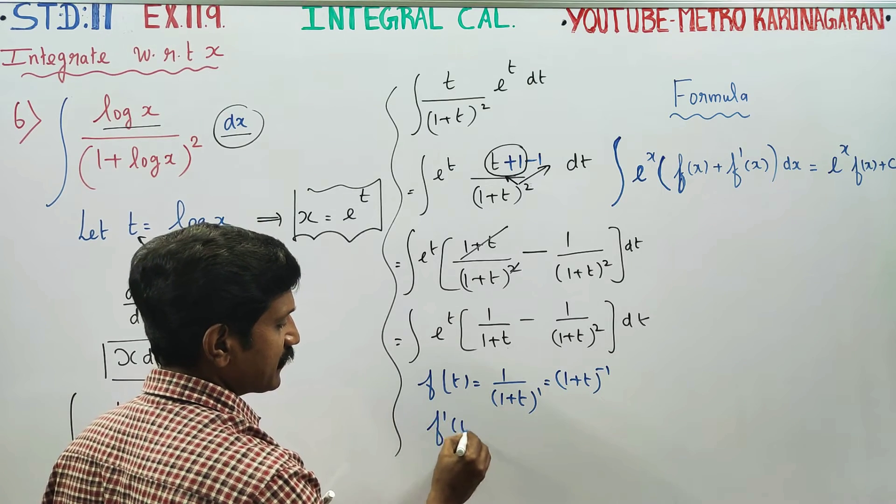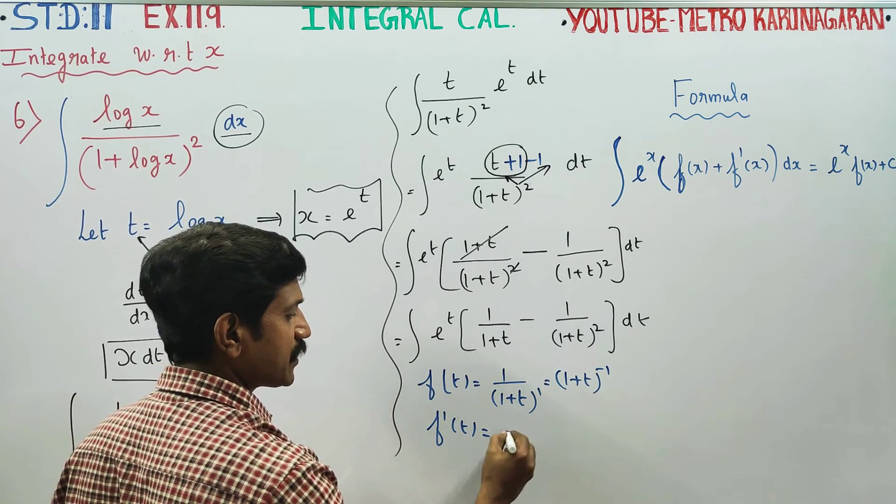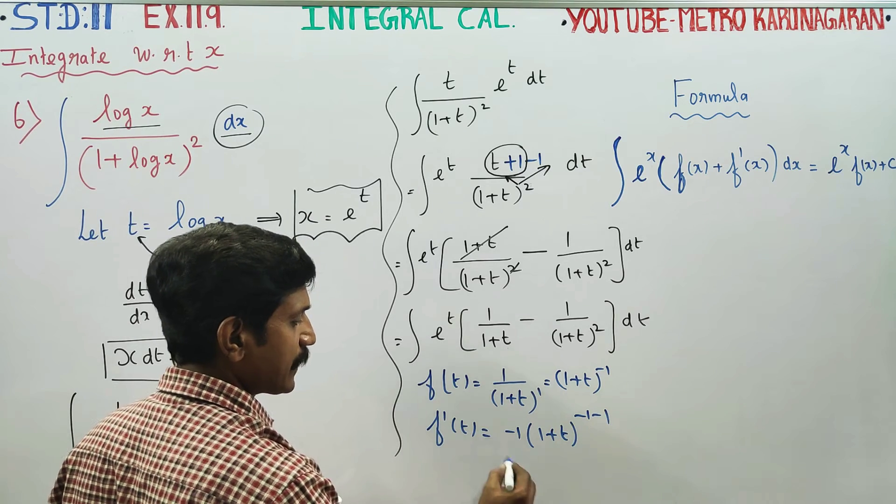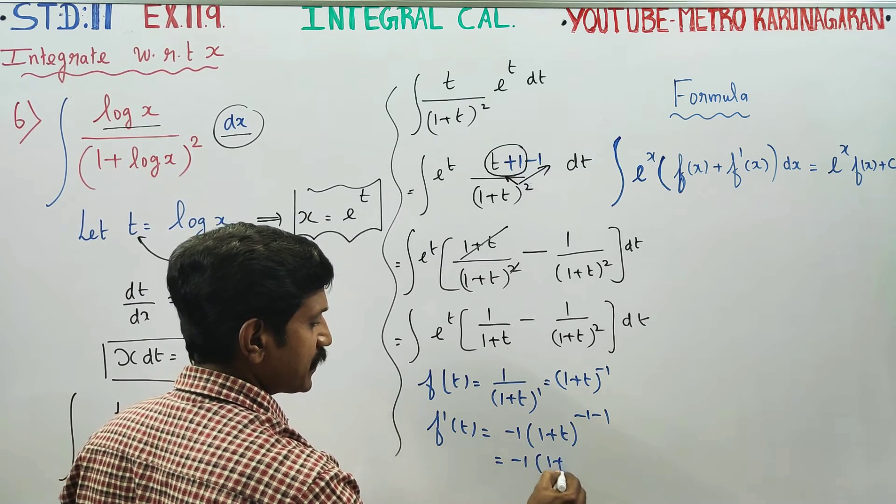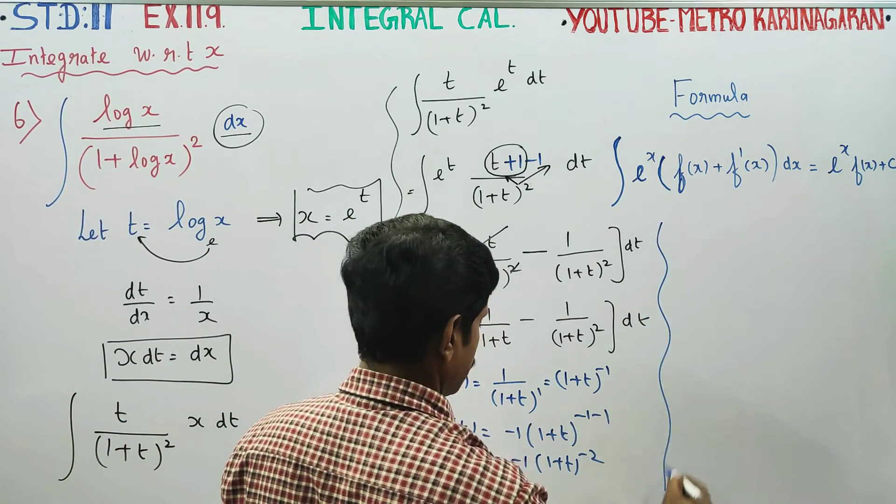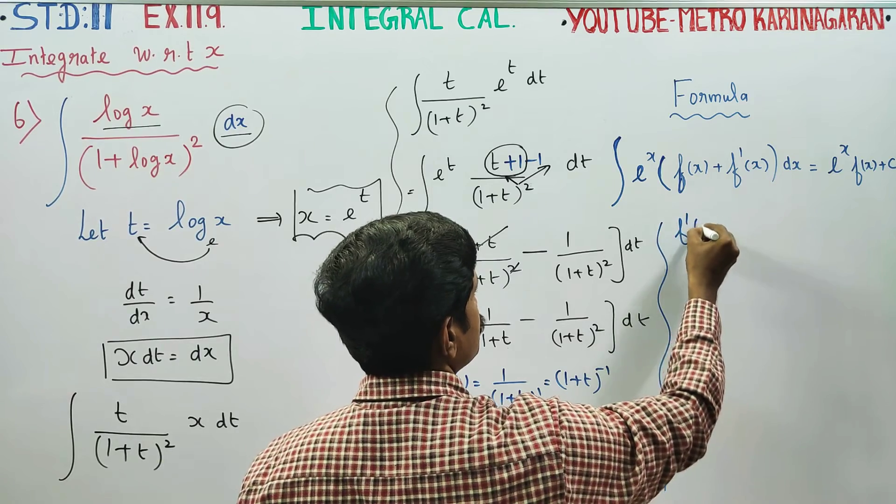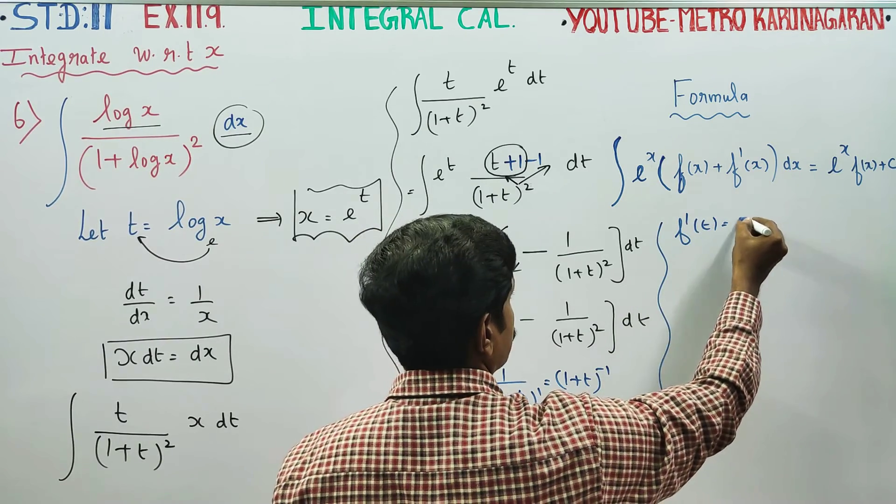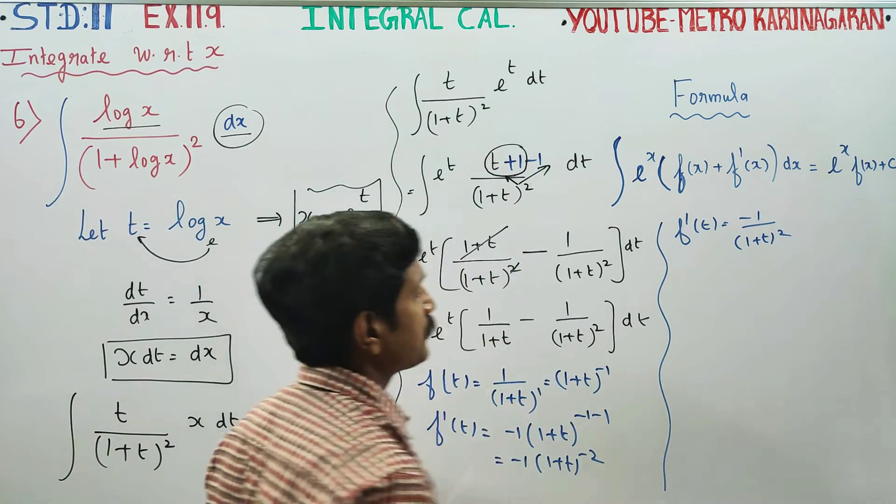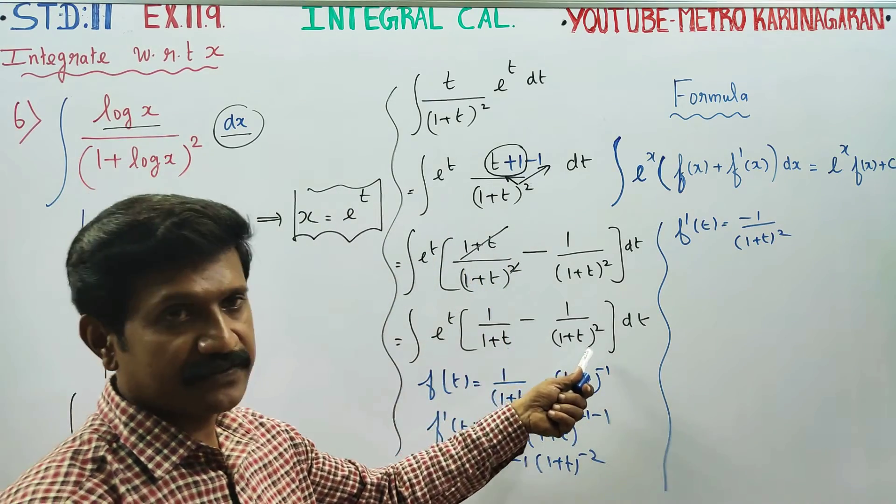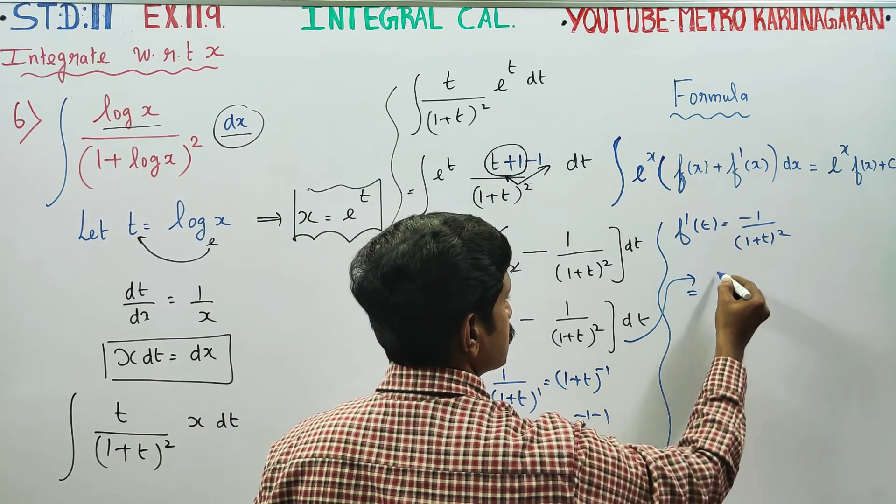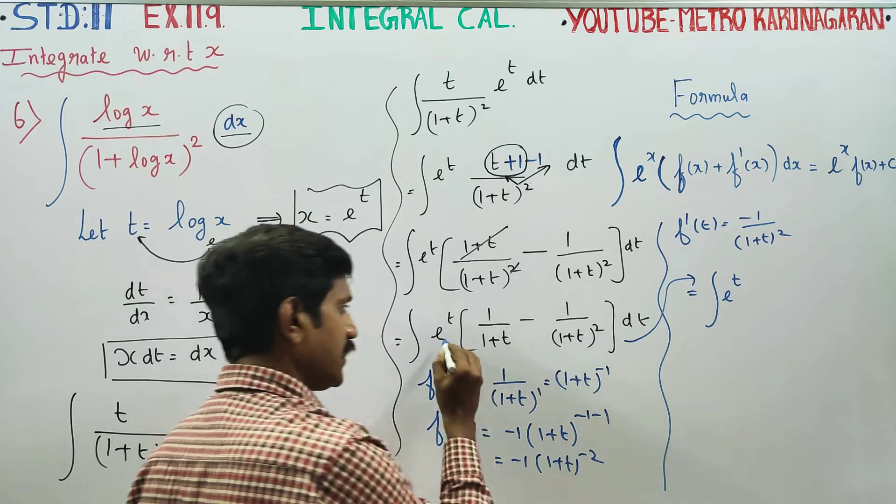This is 1 plus t power minus 1. The derivative is minus 1 times 1 plus t power minus 2, which is minus 1 by 1 plus t whole square. This sum becomes e power t.